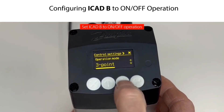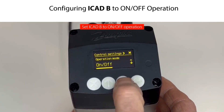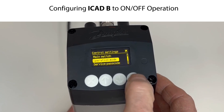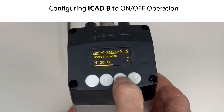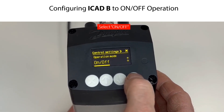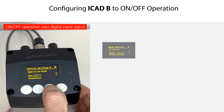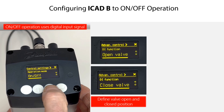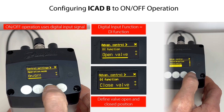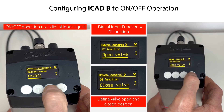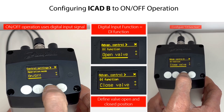Let us now configure the ICAD-B to On-Off Operation. Scroll down to Operation Mode, then press Enter. Select On-Off, then press Enter and Exit. Please note that the On-Off Operation Mode is based on a Digital Input Signal, where the open and closed position of the valve needs to be defined. This is called the Digital Input Function, or simply DI Function. Therefore, you might also need to configure this in the ICAD-B.